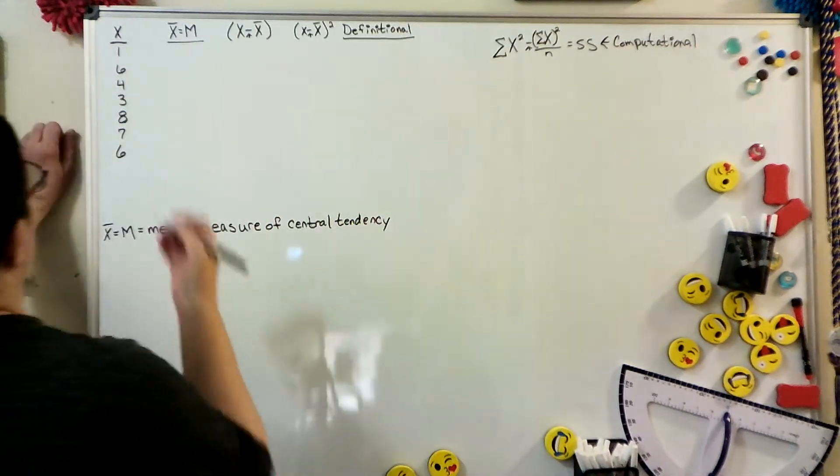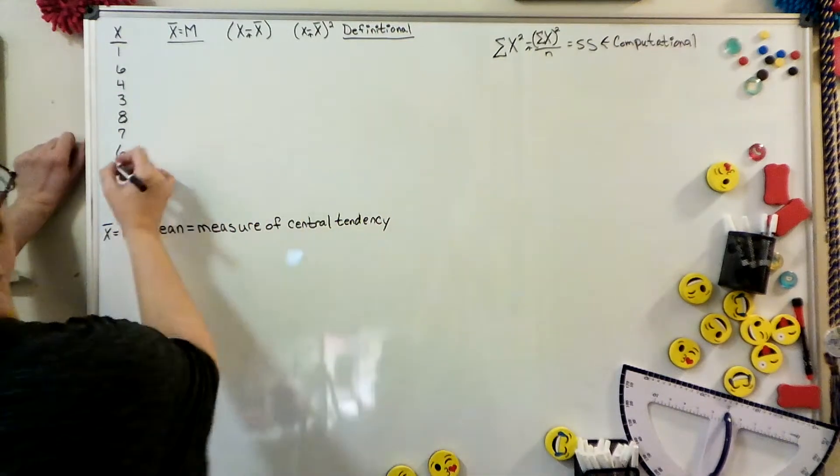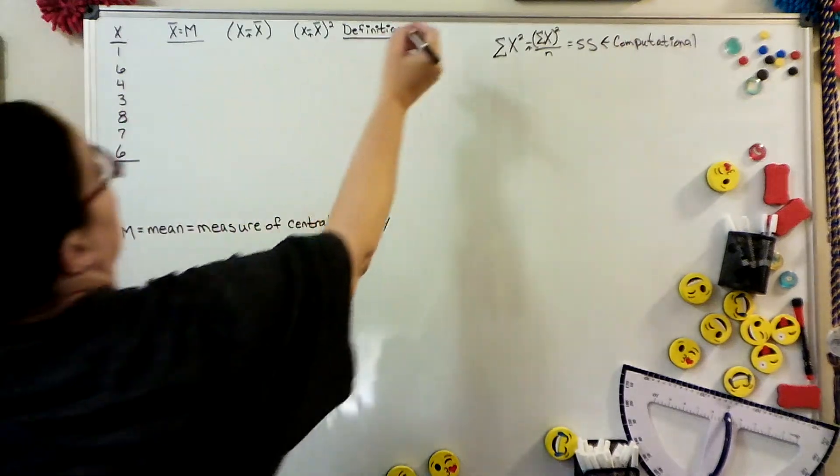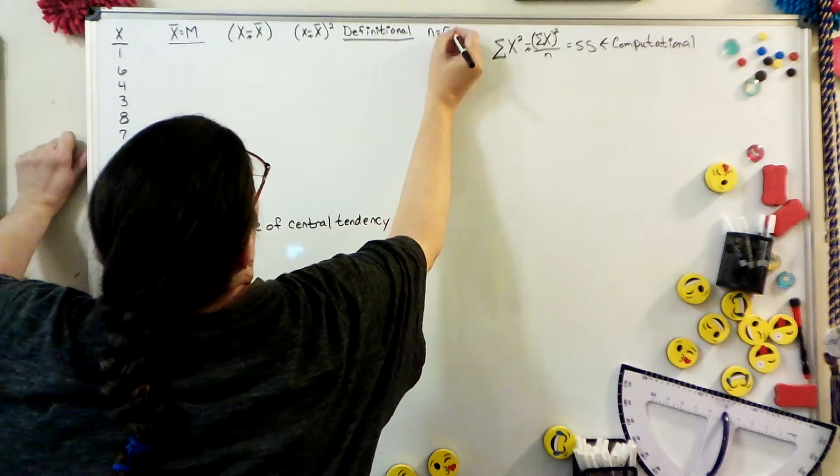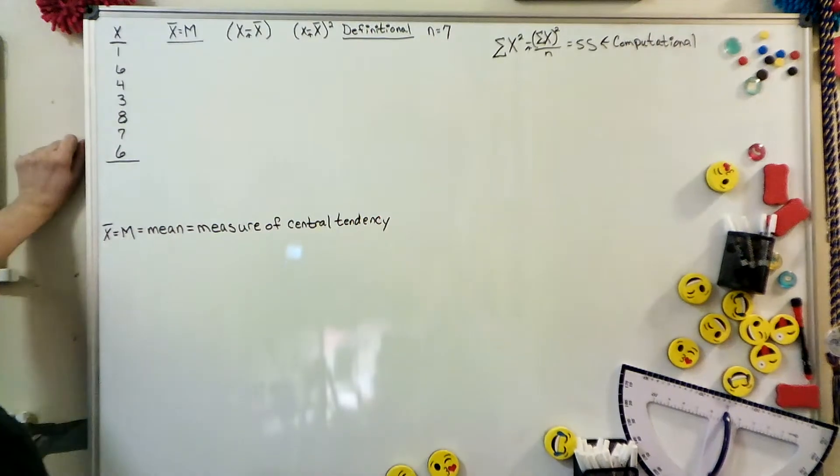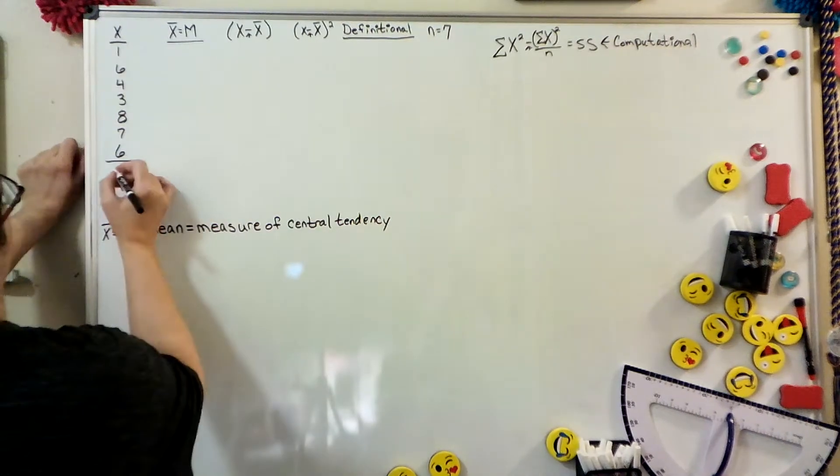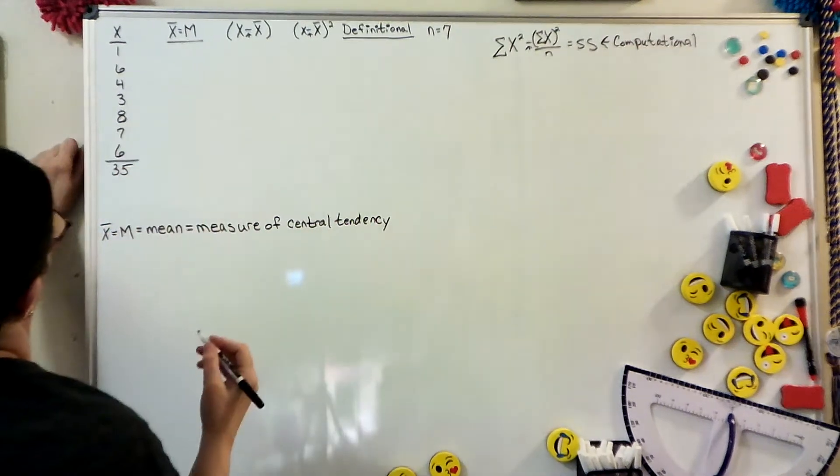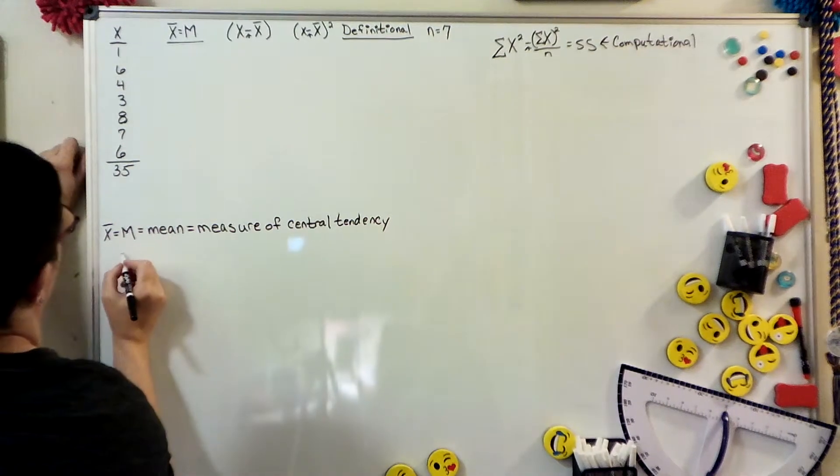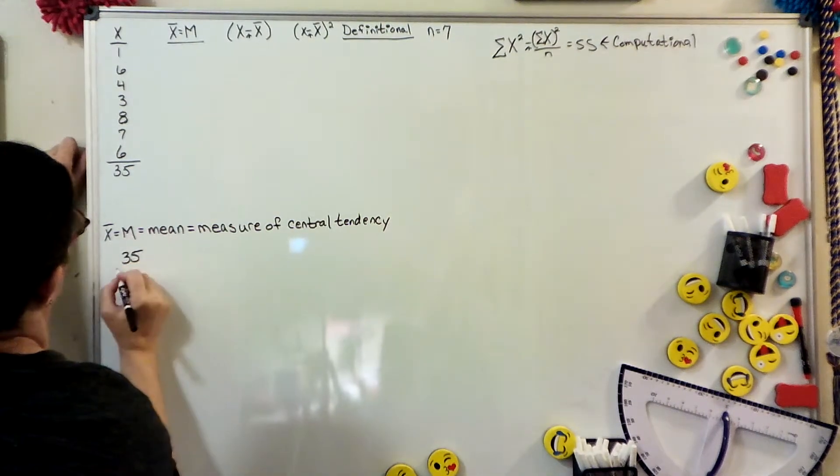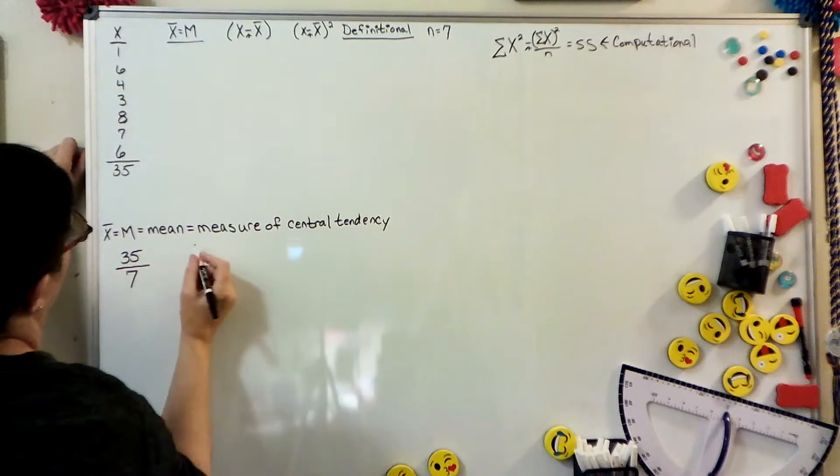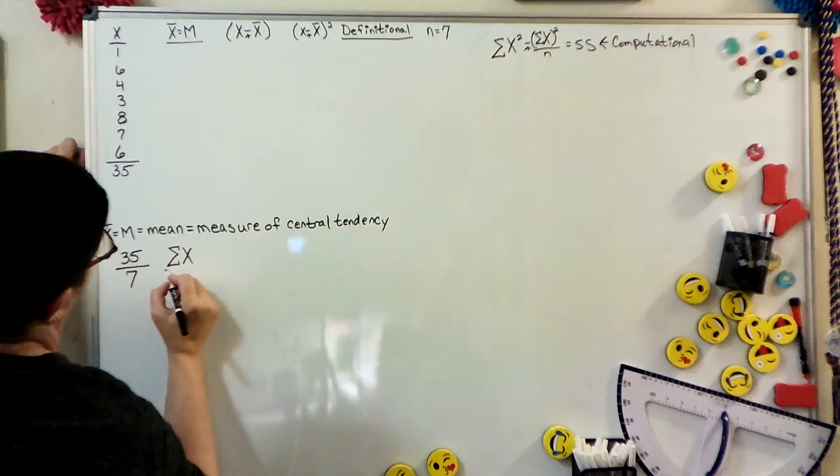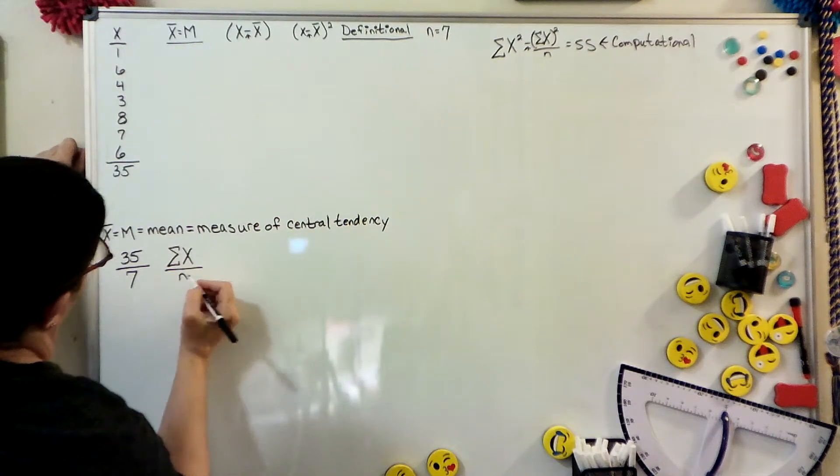So to get the mean, you add each score, and you come up with a grand total. You have seven of them, and you use a small n because it's a sample. So adding them up, it comes to 35. Then to find the mean, you put the 35 over the total number of scores. The formula looks like this, and it comes to 5.